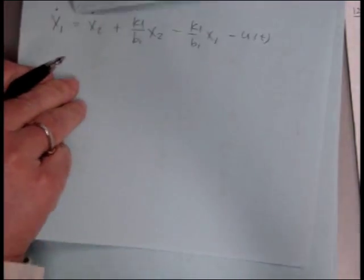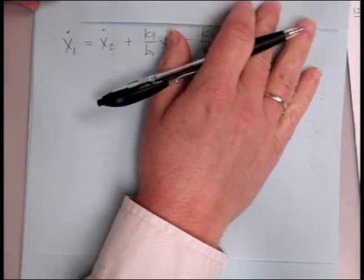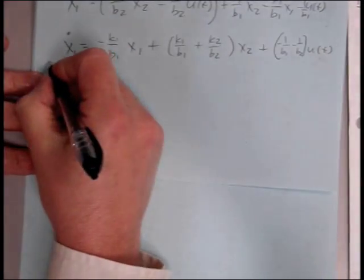Okay, and let's then substitute in to that for what x2 is, and we should have x1 dot with no derivatives on. Okay, and so our state equation, so this is our second state equation.